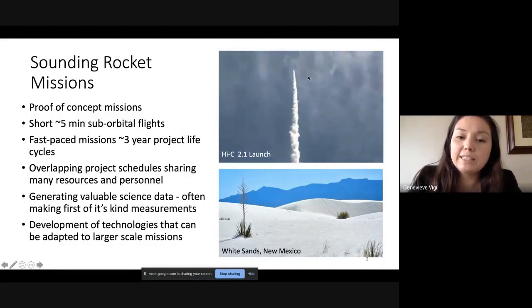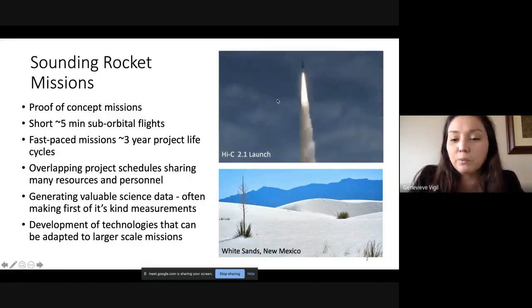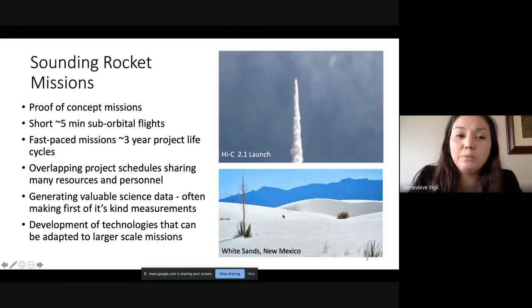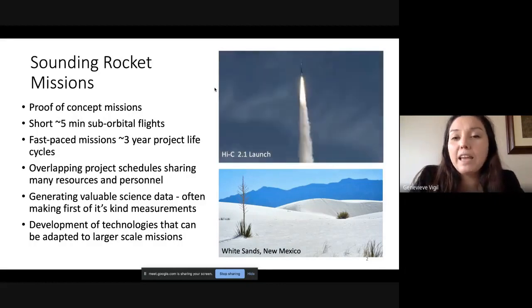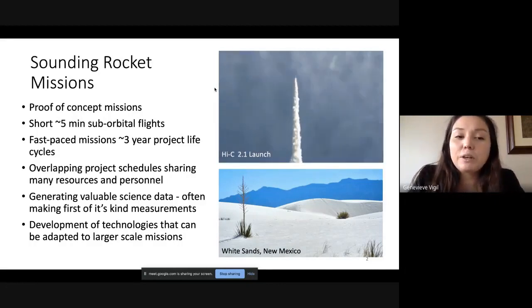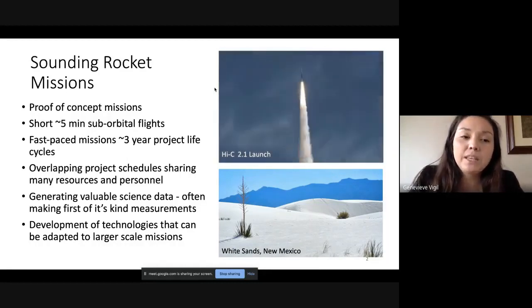We basically mount these instruments to these kind of small rocket vehicles. For example, here is the Hi-C sounding rocket that was launched in 2018 from White Sands Missile Range in New Mexico. These sounding rockets have short suborbital flights. We are above the atmosphere for about five minutes.